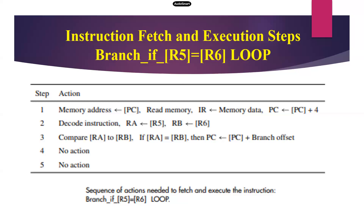So for executing a branch instruction, three steps are essential. For executing a store instruction, four steps are essential. For executing a load instruction, five steps are mandatory. For executing an R format instruction, four steps are required — but the fourth step has no memory action, only the fifth step transfers the content to the destination register. This is the example of how to fetch and execute an instruction and what steps are required. I hope you understand all four different examples. Thank you.